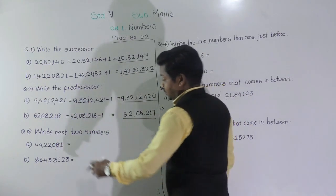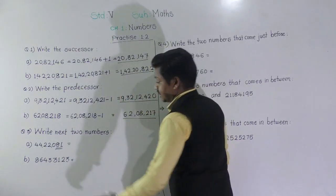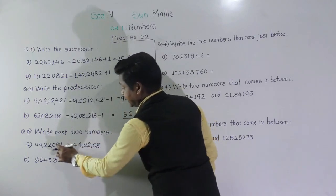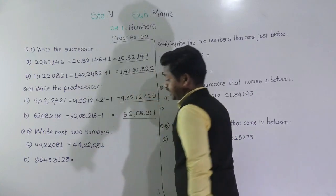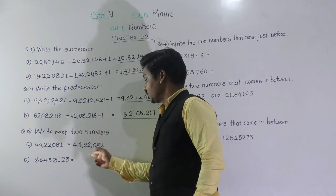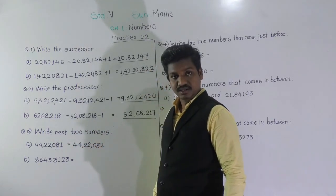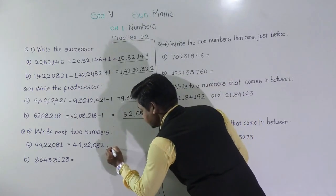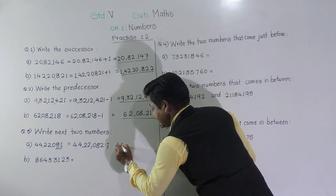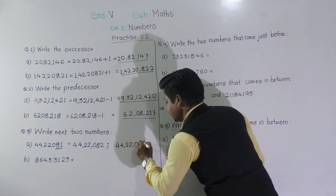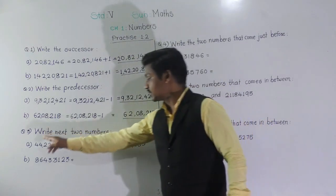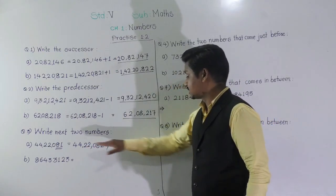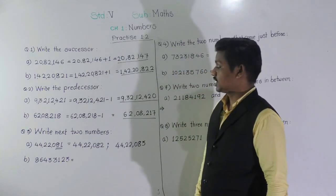You know the numbers after 81 are 82 and 83. The next two numbers will change only the last digits; all remaining digits stay the same. So for 44,22,081, the next number is 44,22,082, and the number after that is 44,22,083. These two are the next numbers after 44,22,081.